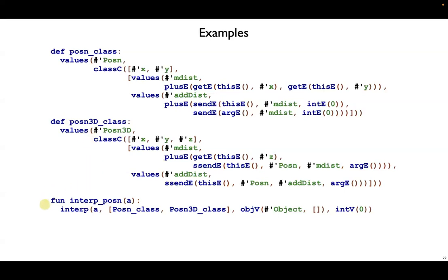Finally, we have a wrapper around interp called interp_posn. This function takes in one expression, a. It interprets a using a class table that has our two posn classes, then a dummy object for this, and a dummy value for the method argument.